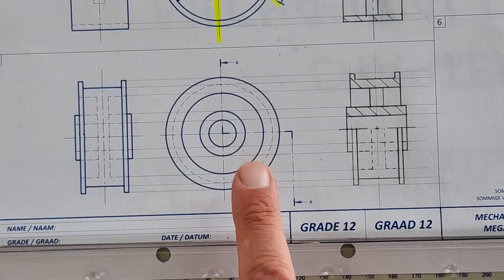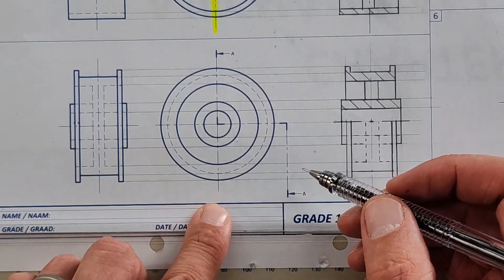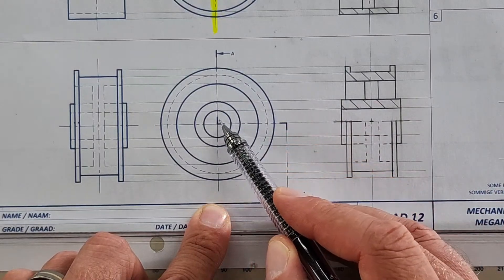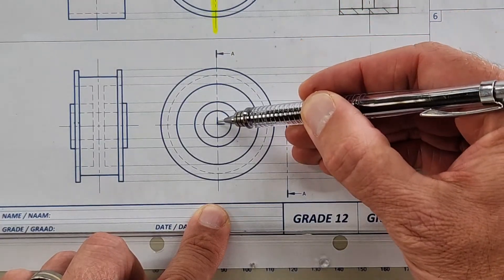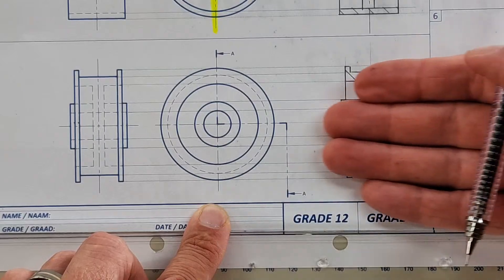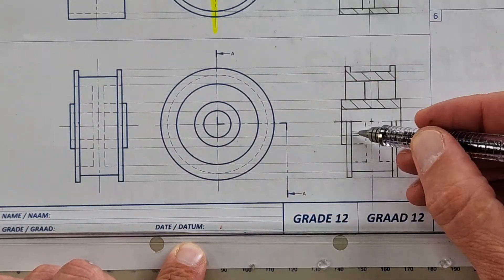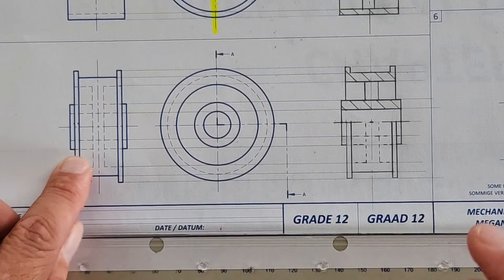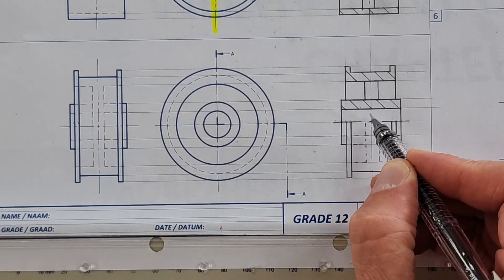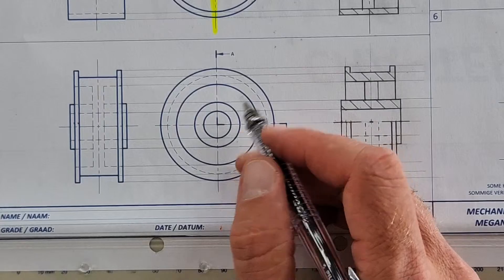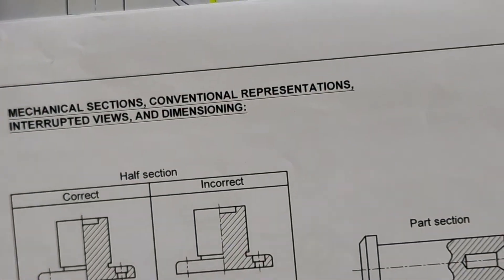The third one is where it starts getting interesting — please watch the video in the description for more detail. Now we have a half section. If I look from the right hand side, it's actually a multi-plane section — it goes up, down, and here is on the outside. Looking from the right hand side, only this top half will be sectioned; the bottom part is on the outside and I will see it exactly like it is on this side.